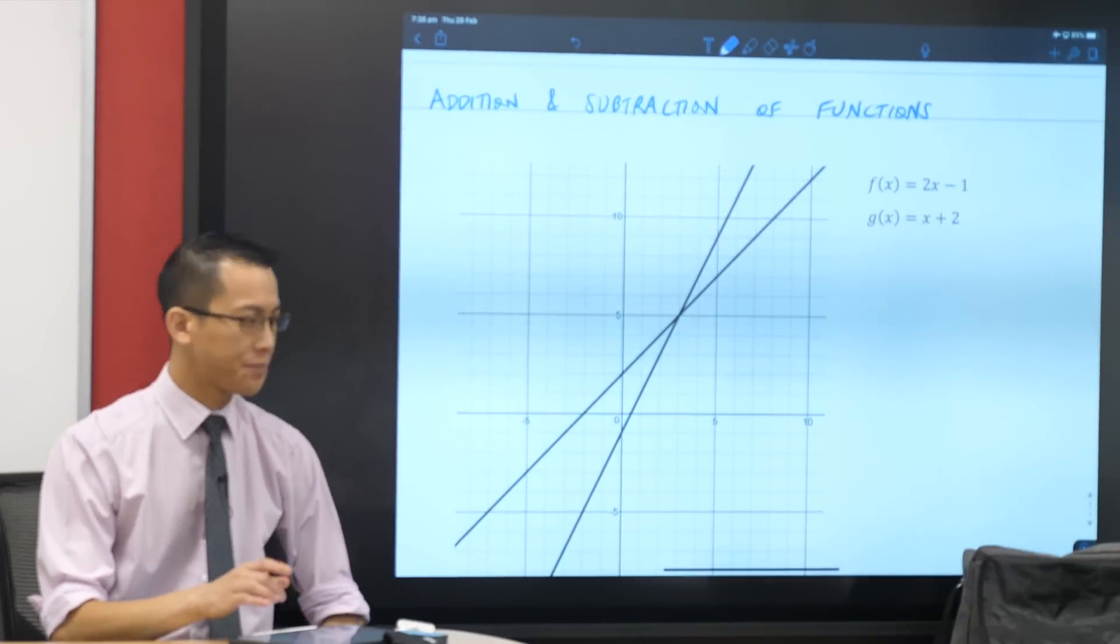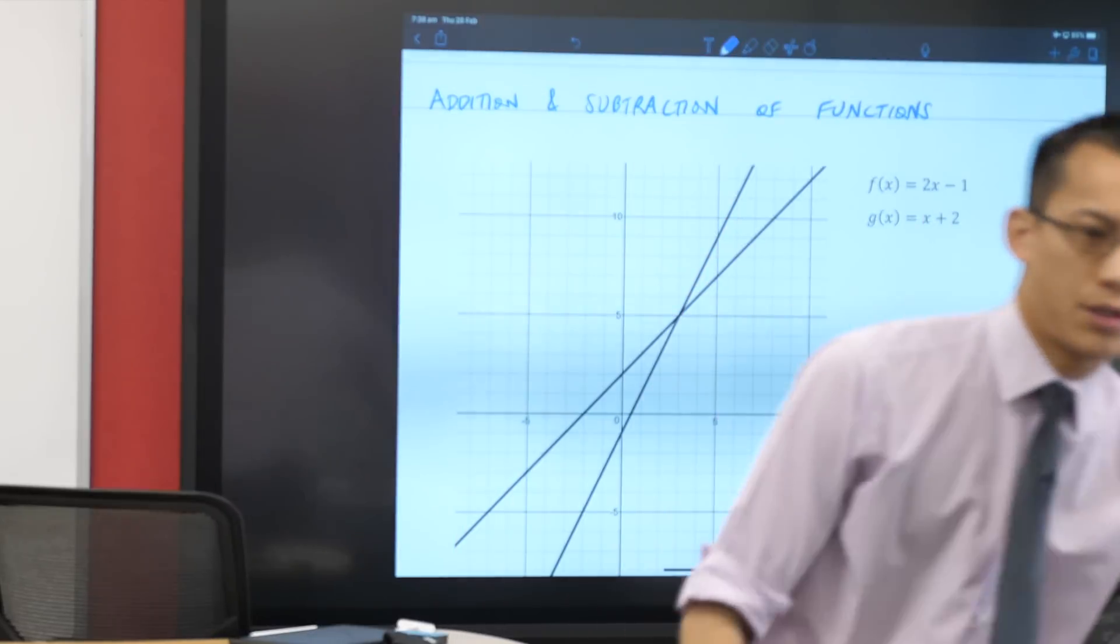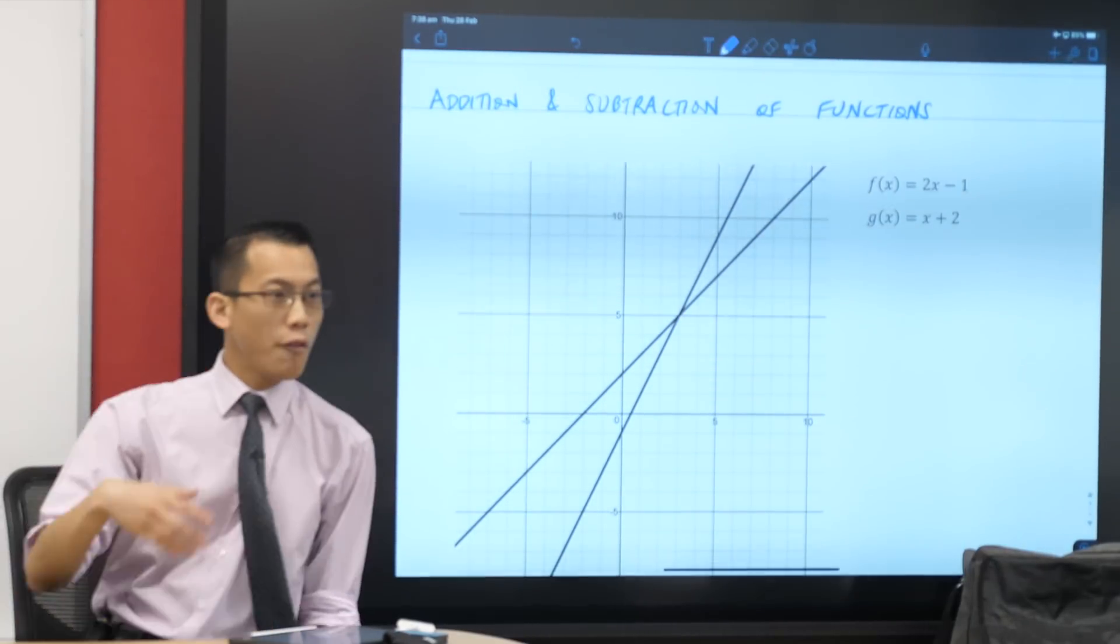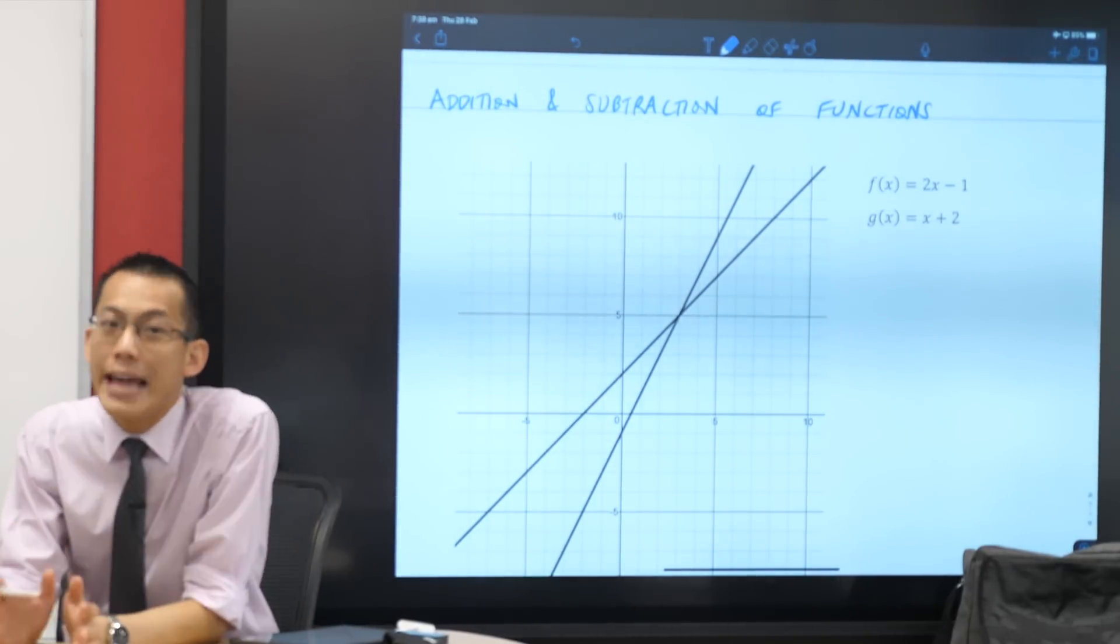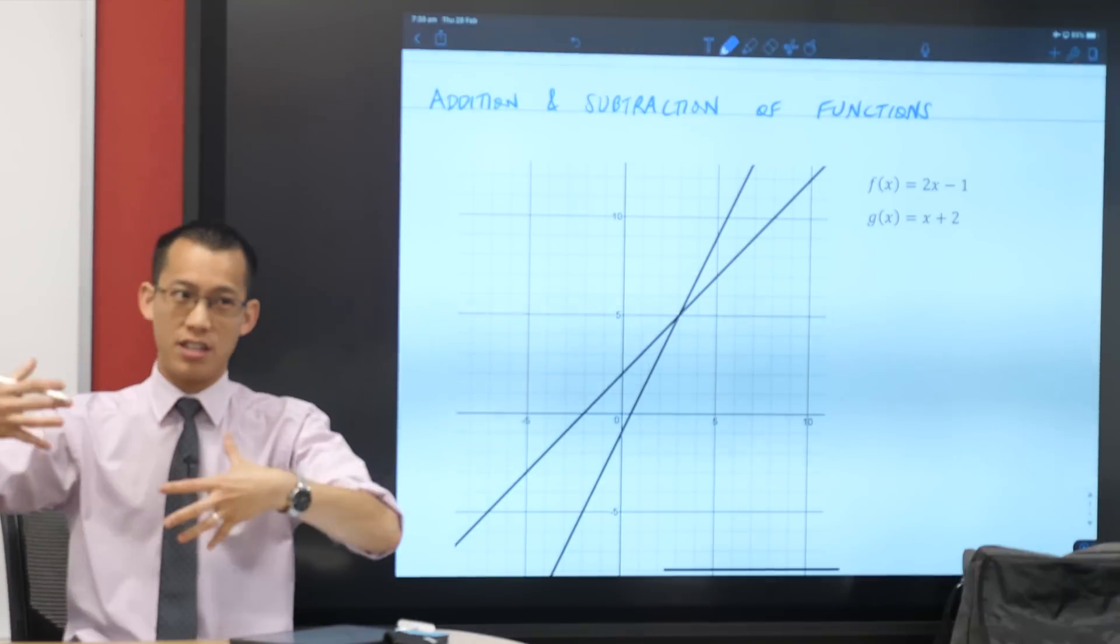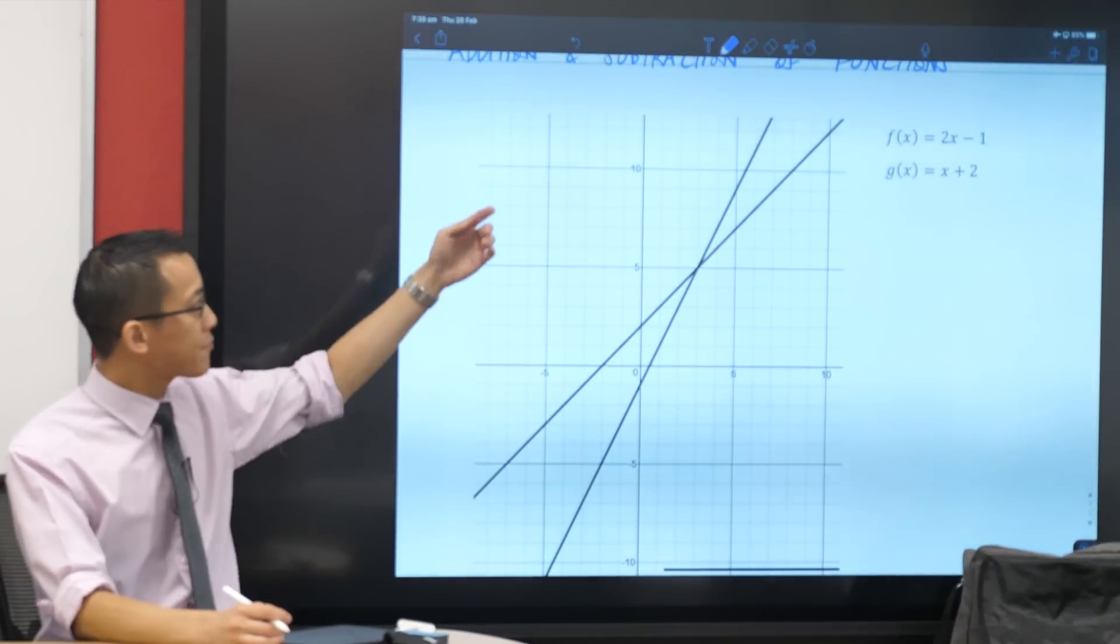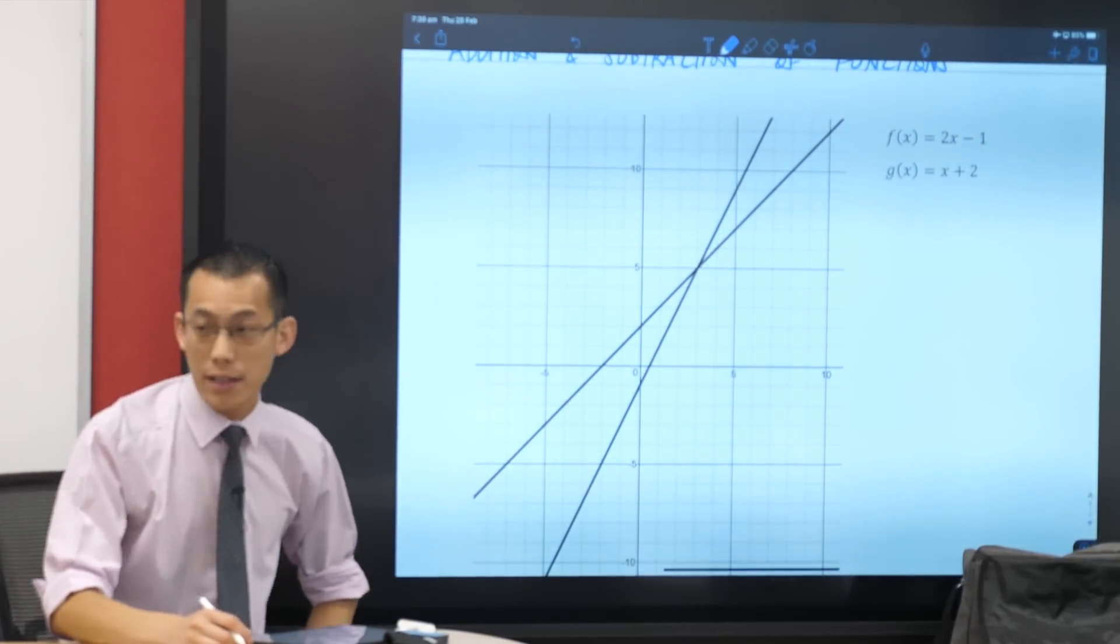For that reason, you can see the functions that we're starting with today. They're all functions that you know about. We could graph these without knowing about addition and subtraction of functions, but I want us to use addition and subtraction of functions as our lens. Here's the first one we're looking at: f of x equals 2x minus 1 and g of x equals x plus 2.